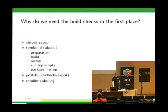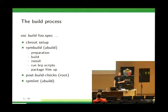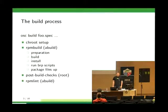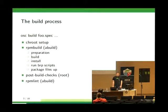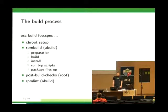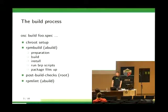Let's take a look at the build process. In OpenSUSE, you typically build a package with OSC build by going to the directory where the package is checked out and running OSC build on the spec file. Then OSC build downloads the RPMs from the build service and sets up a chroot. In the chroot, it calls the RPM build tool, which runs as the auto-build user, so it's unprivileged.